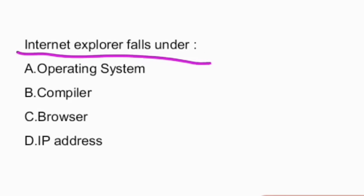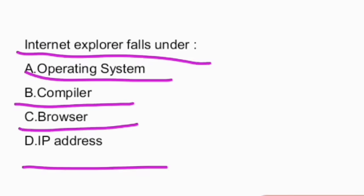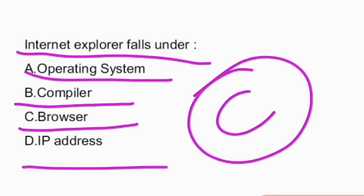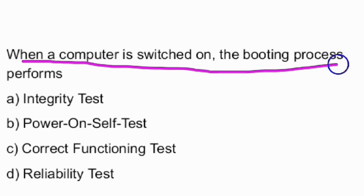Next question: internet explorer falls under — operating systems, compiler, browser, or IP address? Internet Explorer is a browser — option C is the right answer.